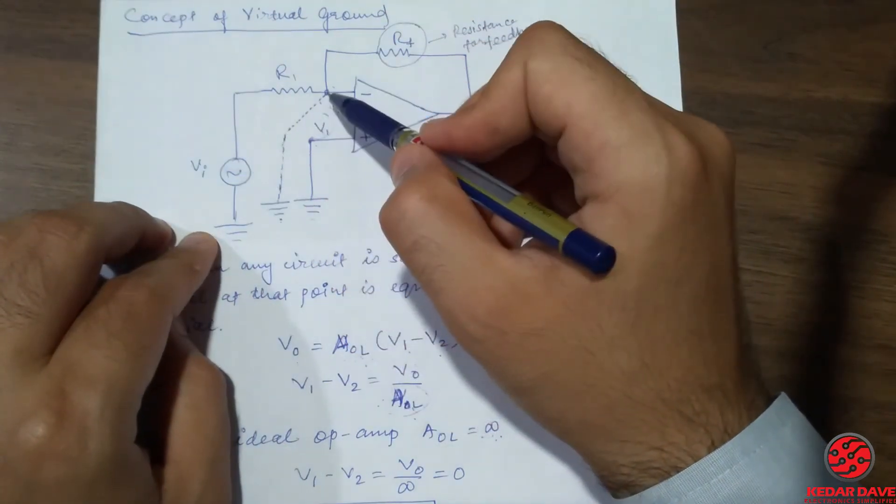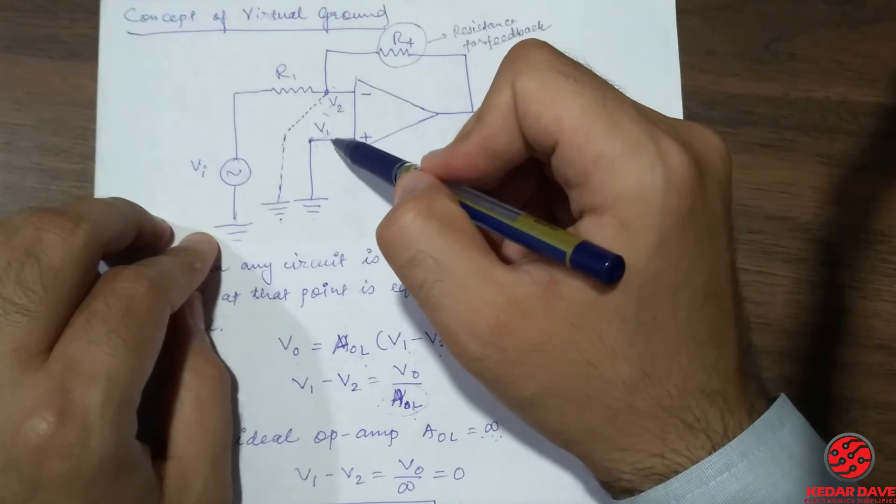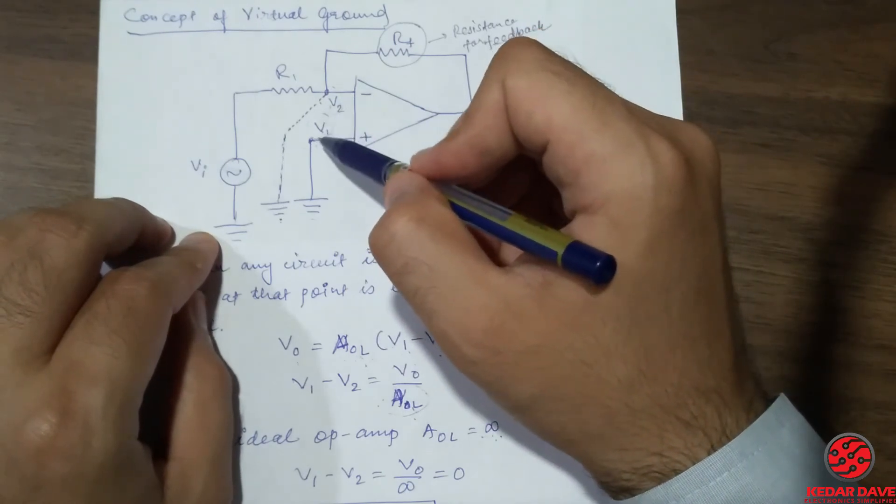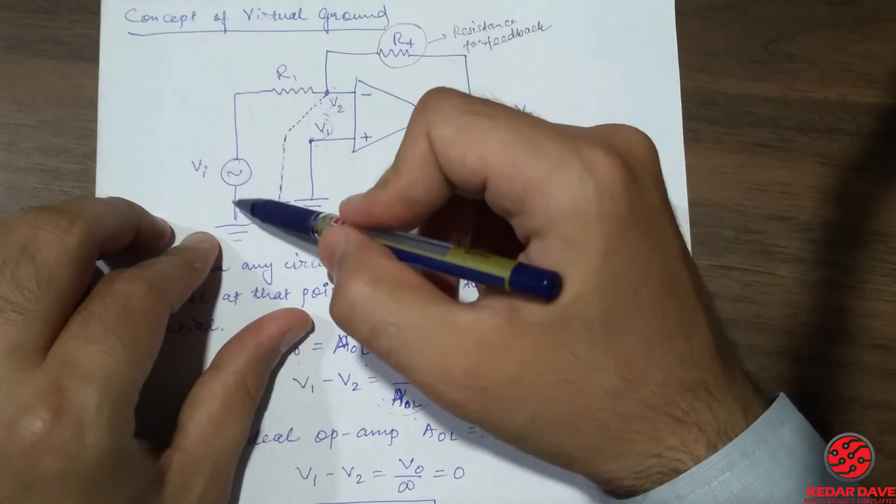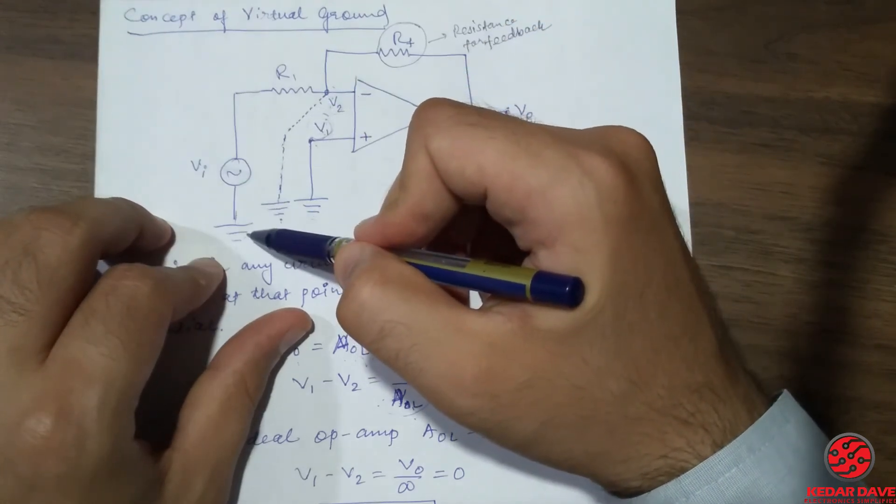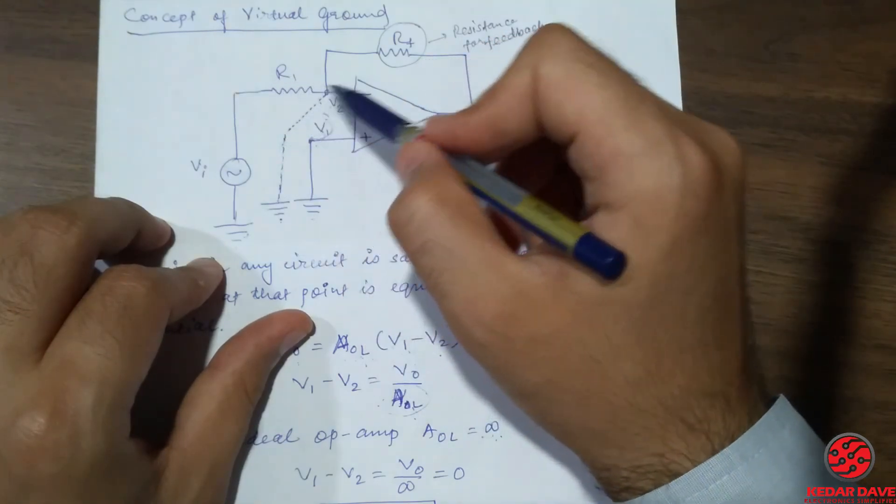And if we physically measure this V2 then it also shows the same voltage potential as that of V1, so we can say that the V2 terminal is virtually grounded. So that's all for the concept of virtual ground.